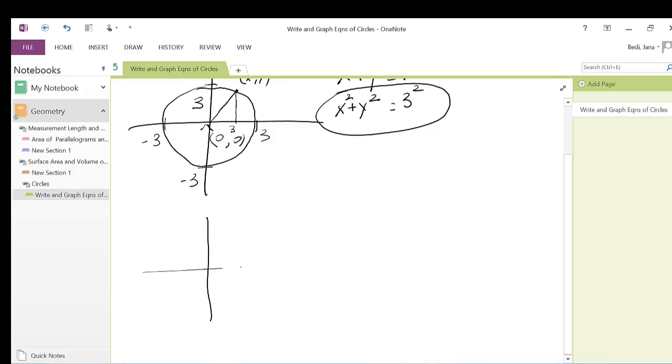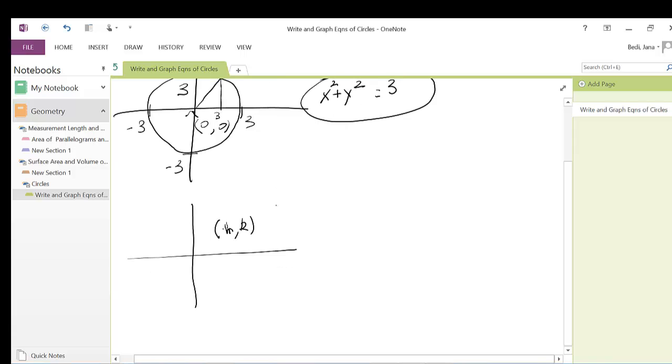So let's draw another circle. And this time, we'll say it has center (h, k) and it has radius r.